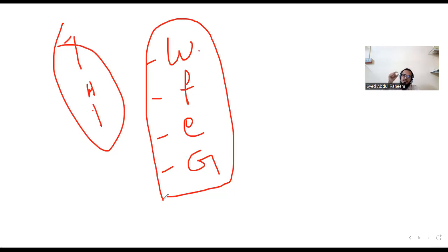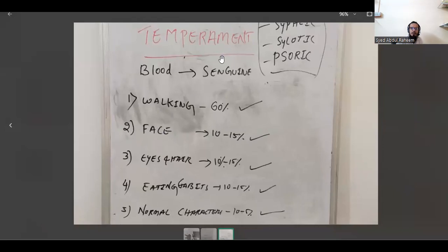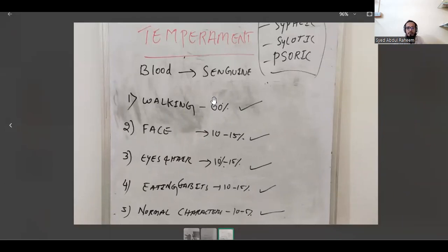From those observations, you will be able to understand the temperament of the patient. By walking alone, you can understand 60% of a person's temperament. By facial expression, 10 to 15%. Eyes and hair, 10 to 15%. Eating habits, 10 to 15%. Normal characters, 5 to 10%. So by walking alone you can understand 60% of the temperament — this is very important. That is why you have to check walking style, face, eyes, hair, eating habits, and normal characters.